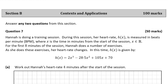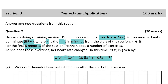At the start of this question we're given a few lines explaining what's happening. Someone's doing a training session and their heart rate, represented by h(x), is measured in beats per minute. x is the time in minutes from the start of the session. For the first eight minutes, Hannah does a number of exercises, and her heart rate h(x) is given by 2x³ minus 28.5x² plus 105x plus 70.